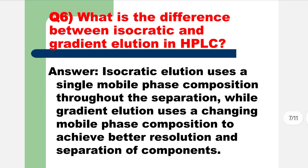What is the difference between isocratic and gradient elevation in HPLC? Isocratic elevation uses a single mobile phase composition throughout the suppression, while gradient elevation uses a changing mobile phase composition to achieve better resolution and suppression of components.